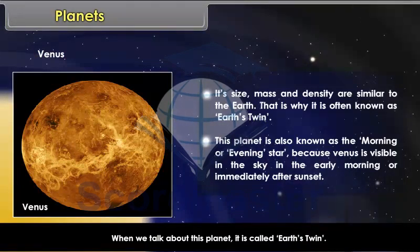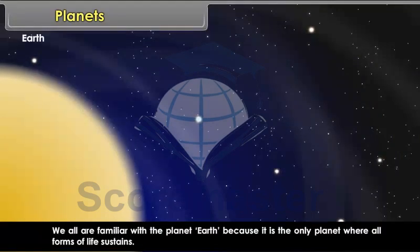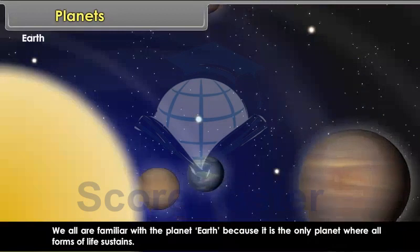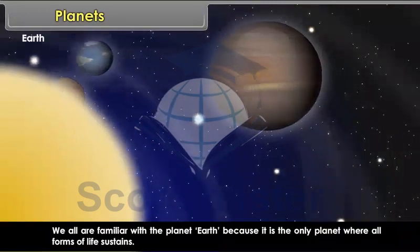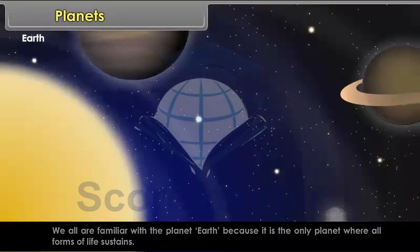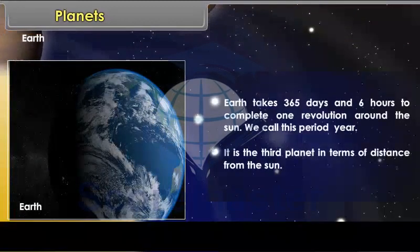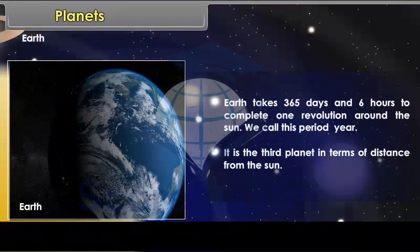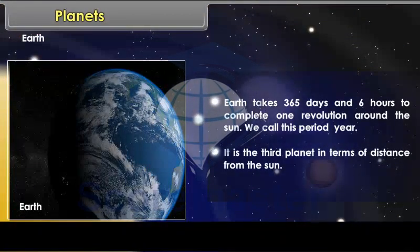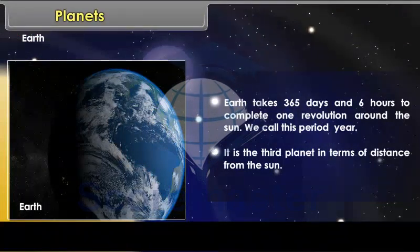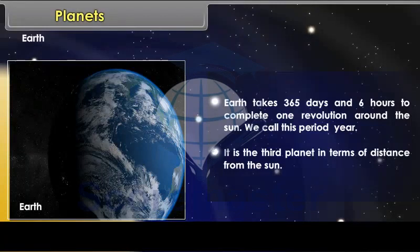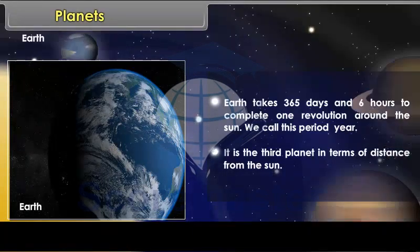Earth. We all are familiar with the planet Earth because it is the only planet where all forms of life sustains. Earth takes 365 days and 6 hours to complete one revolution around the Sun. We call this period Year. It is the third planet in terms of distance from the Sun.